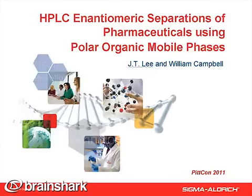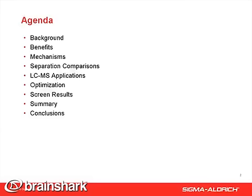Hi, this is J.T. Lee. This talk was presented at the 2011 PittCon. The title of the talk is HPLC Enantiomeric Separations of Pharmaceuticals Using Polar-Organic Mobile Phases. I will start with the background on this terminology, the polar-organic solvents, and mention the major benefits and talk about chiral mechanisms. I'll focus on the Chirobiotic V2 and OD column for comparison, and how to convert into LC-MS applications. I'll explore some variables for optimization, show a screen result on a list of 26 pharmaceuticals showing the complementary effects between the Chirobiotic V2 and OD column, and then summarize the results and draw some conclusions.